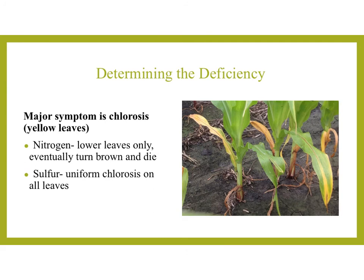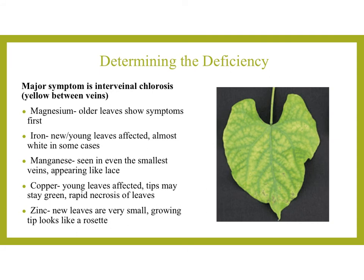To determine the deficiency: chlorosis — yellowing of the leaves — is a major symptom. When we see yellowing, the first guess would be a nitrogen issue, and you'd look to see if only the lower leaves are yellow and eventually turn brown and die. If it's uniform yellowing everywhere, it could be due to sulfur. When the symptom is interveinal chlorosis — yellowing between the veins — if it's magnesium, the older leaves show symptoms first; if it's iron, the new young leaves are most affected and could appear almost white; and if it's manganese, even the smallest veins will appear like lace.